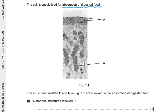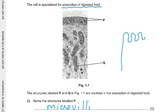The structure labelled P is microvilli. Microvilli are folds of the cell membrane that increase the surface area on this side, which helps in the absorption of digested food.